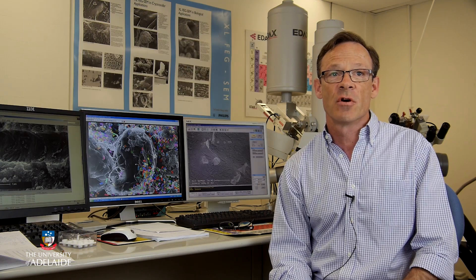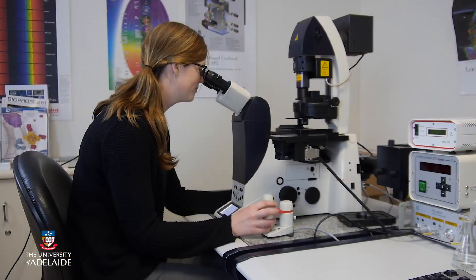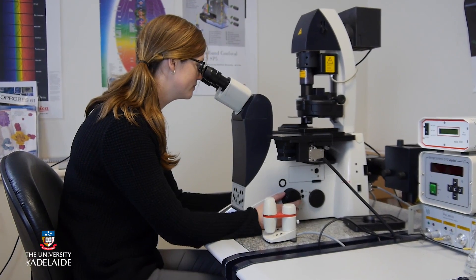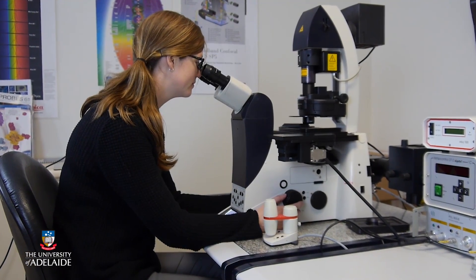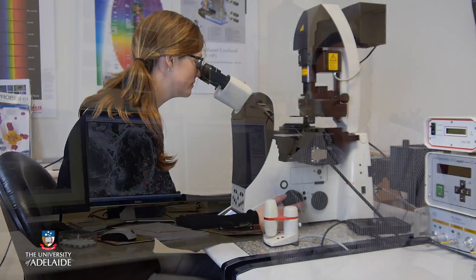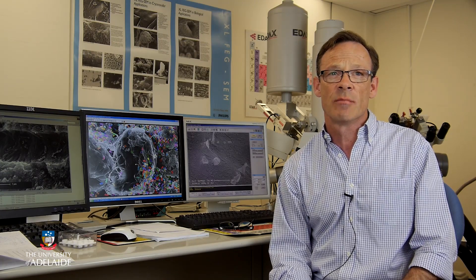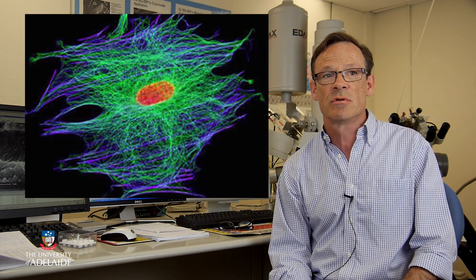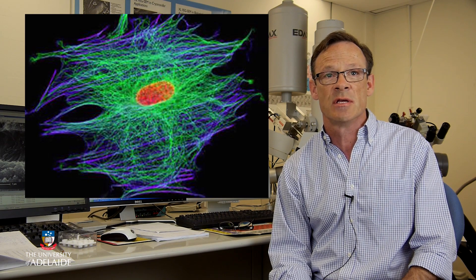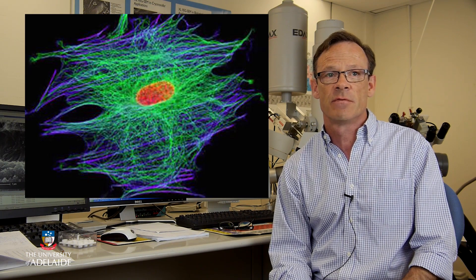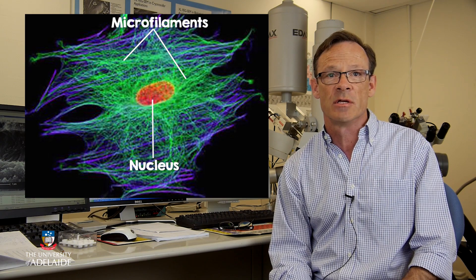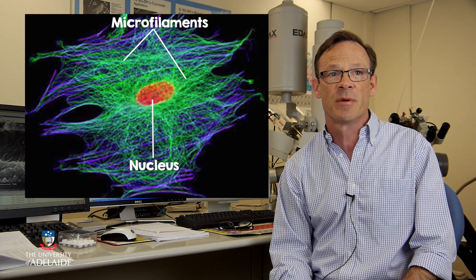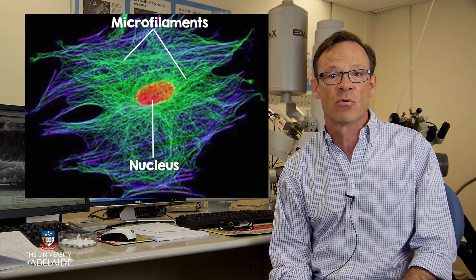Finally, confocal microscopes are special microscopes that use lasers to reconstruct in 3D the appearance of internal components of a cell. Cells are usually labelled with one or more fluorescent probe to give internal structures bright colours that are easier to see. For example, in this confocal image, microfilaments in the cytoplasm have been tagged with a fluorescent green probe.